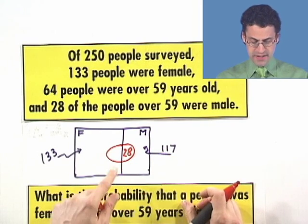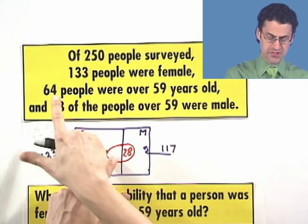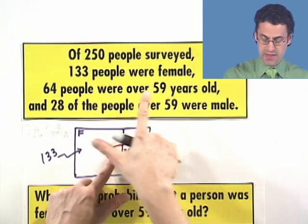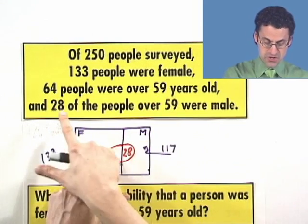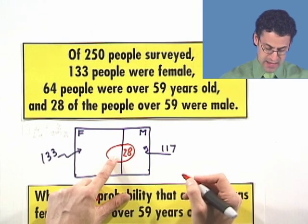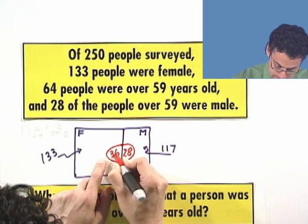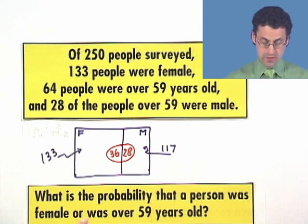Well, can we figure out how many females there are that are over 59? Absolutely, because we know there's a total of 64 people that are over 59. 28 of them were male. That means that if we take 64 and subtract 28, so we see 36, that must be the total number of females that are actually over 59.